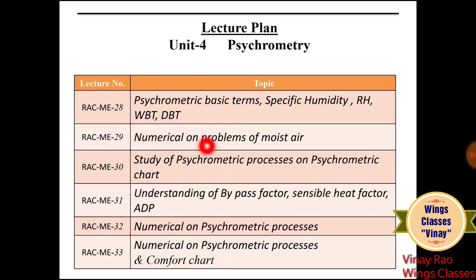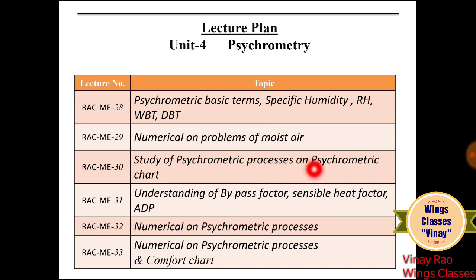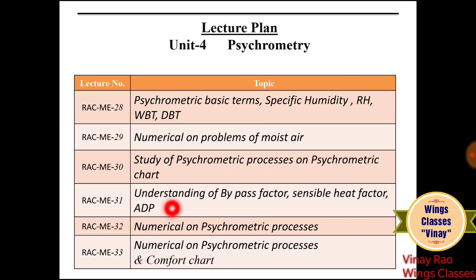Lecture 29 covers numerical problems on moisture. Lecture 30 covers the Study of Psychrometric Processes — sensible heating, sensible cooling, humidification, and dehumidification. These processes are all studied with the help of the psychrometric chart. Lecture 31 covers understanding of Bypass Factors, Sensible Heat Factor, and ADP, along with numericals based on the psychrometric chart.